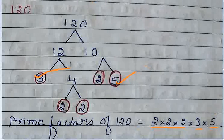Hence the prime factors of 120 equals to 2 into 2 into 2 three times, 3 one time multiplied by 5 one time.